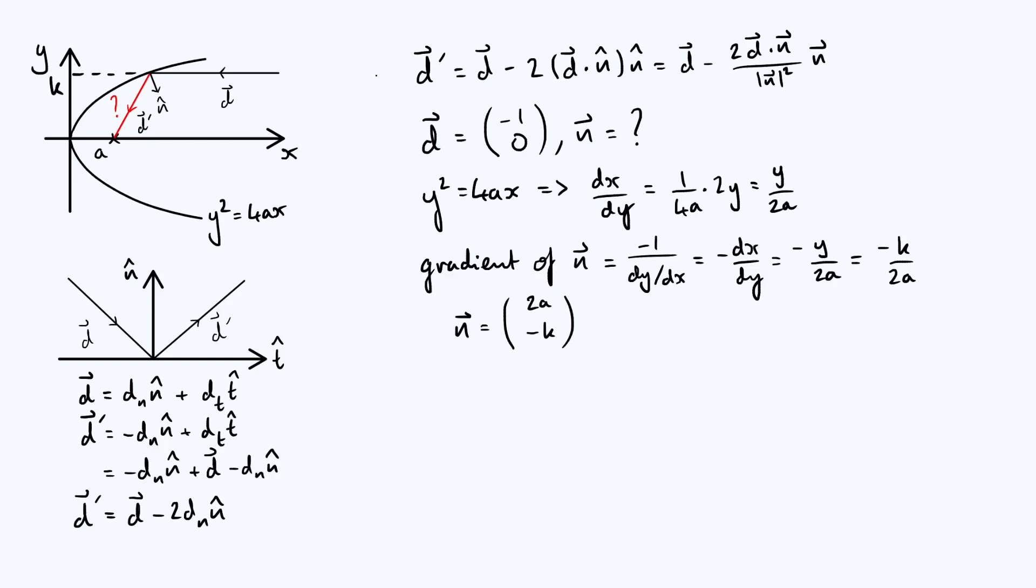So let's plug in n and d into our d' formula that we've got up at the top there, and let's see what we get. So d' is going to be, firstly, you've got d, which is (-1, 0). Then we're subtracting all of that stuff, so -2 times the dot product of this and this, which is simply -2a, because d has a y component of 0, so the dot product bit is just -2a. Then we've got magnitude squared of n, that's just the sum of squares of the components, which is 4a² + k², and then we've got our n vector, (2a, -k). I'm just going to simplify that second term a tiny bit, and write it as (-1, 0) + 4a/(4a² + k²)(2a, -k), just tidying up those minus signs a bit.